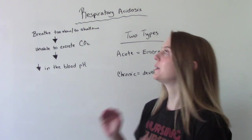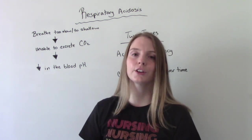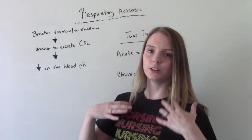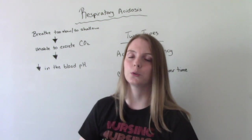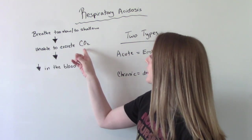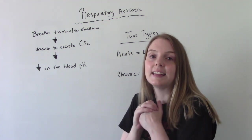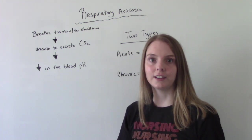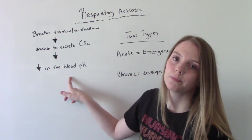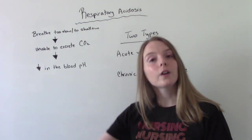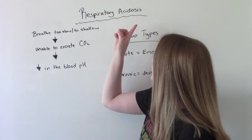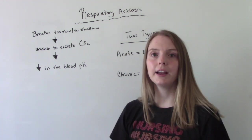How does somebody get respiratory acidosis? What happens is you're hypoventilating, which means you're either breathing too slowly or too shallow. You're not taking deep enough breaths or breathing a normal amount — your respiratory rate is lower. Because they're not breathing enough, they're not excreting enough CO2, so carbon dioxide is staying in the body. When you have an excess of CO2 in the body, it causes a decrease in the pH of the blood. The lower the number on the pH scale, the more acidic — and we don't want our blood to be acidic. So respiratory acidosis causes our blood to become more acidic, which is very dangerous.